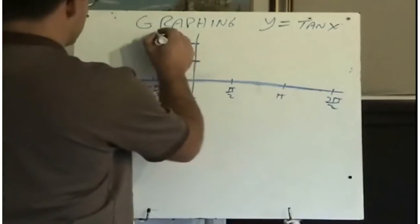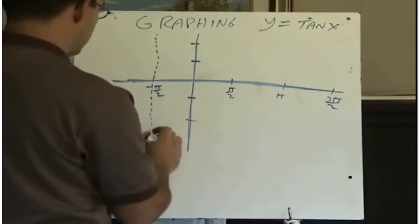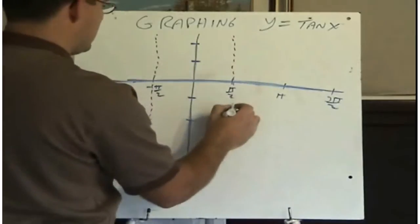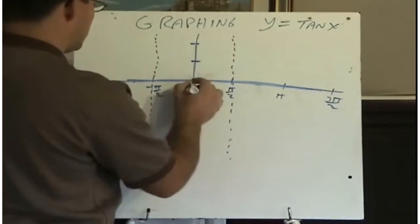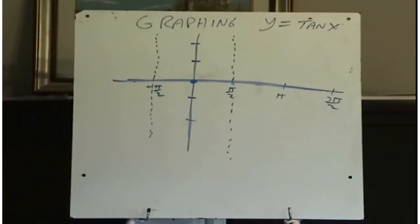This graph has asymptotes, and here's where two of those asymptotes occur, but the graph does go through the point zero, zero.